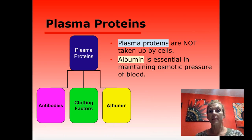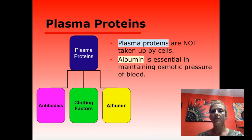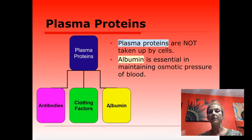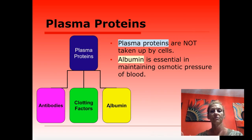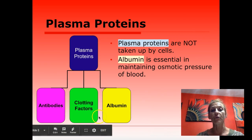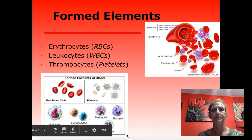Albumin is essential in maintaining osmotic pressure of blood. Osmotic pressure has to do with the pressure difference between capillaries and surrounding tissues, and that determines which direction water will move. So albumin is a pretty important protein.